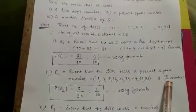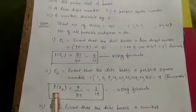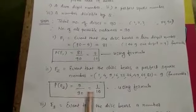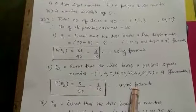So probability of E2 equals 9 by 90 equals 1 by 10 using formula.